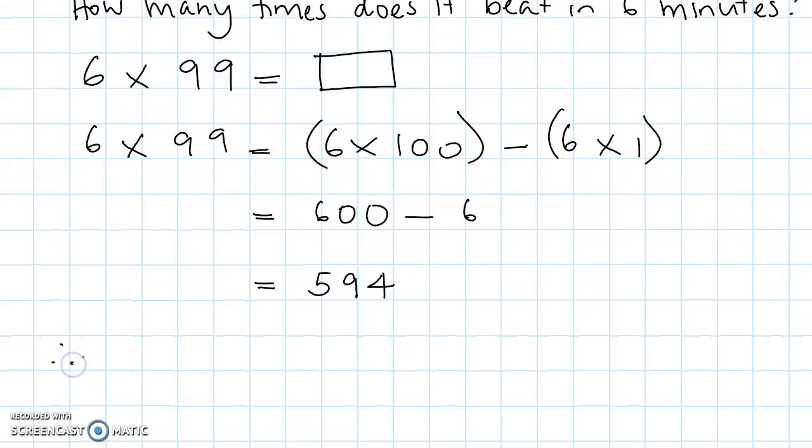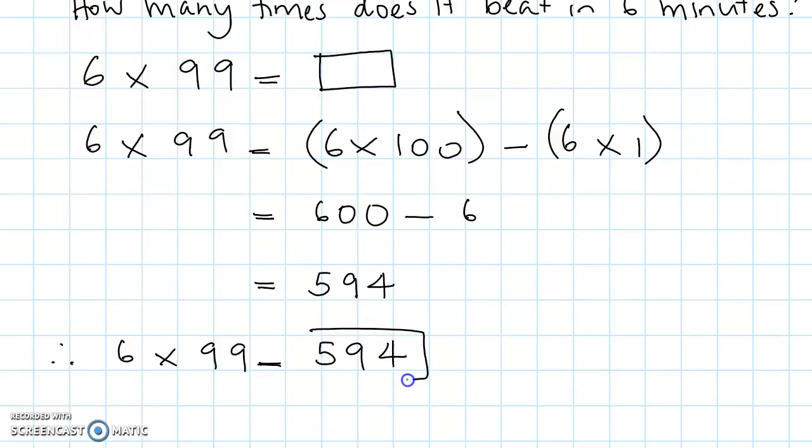Therefore, 6 times 99 equals 594 beats all together in 6 minutes.